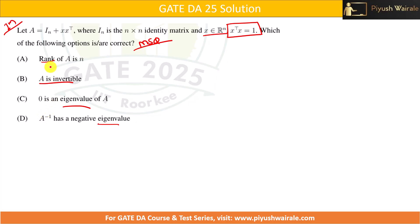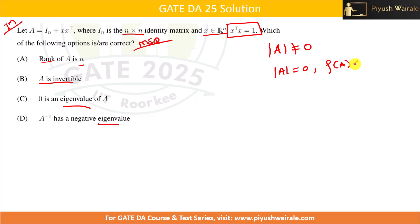For an n×n matrix, if the rank of A equals n, it means the determinant of that matrix is not equal to zero. If the determinant of a matrix equals zero, the rank will be less than n. If the determinant is not equal to zero, the rank equals n.